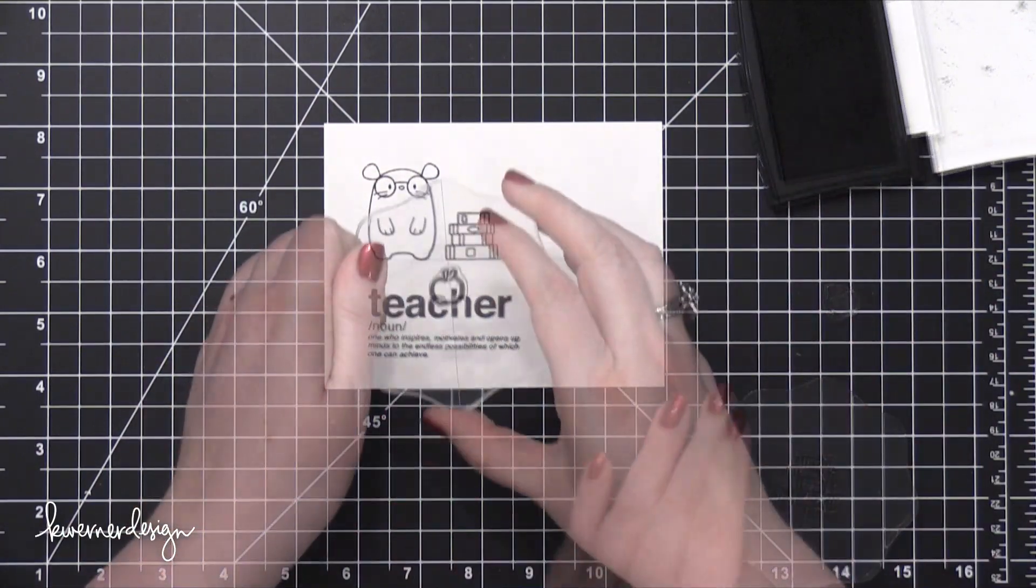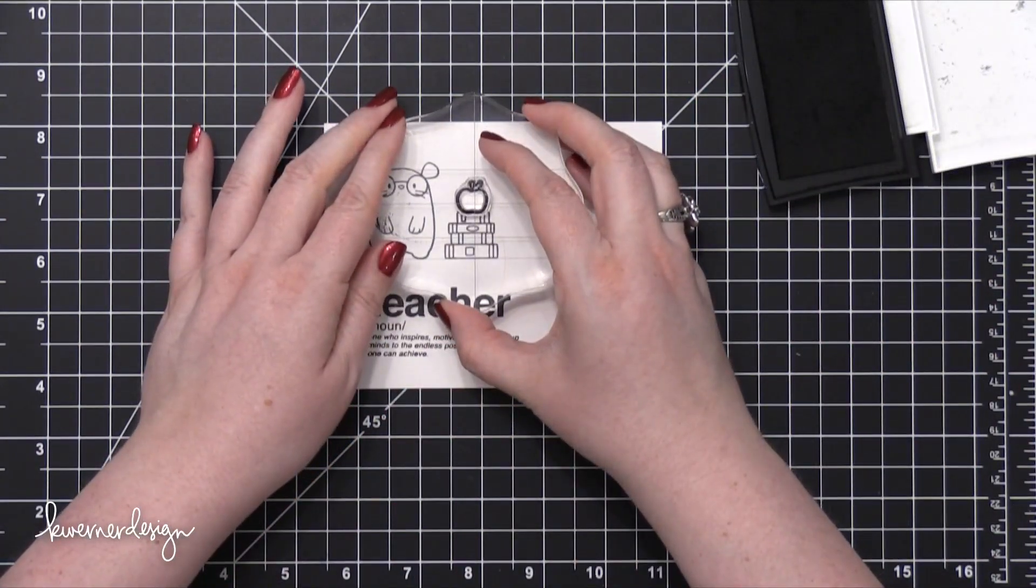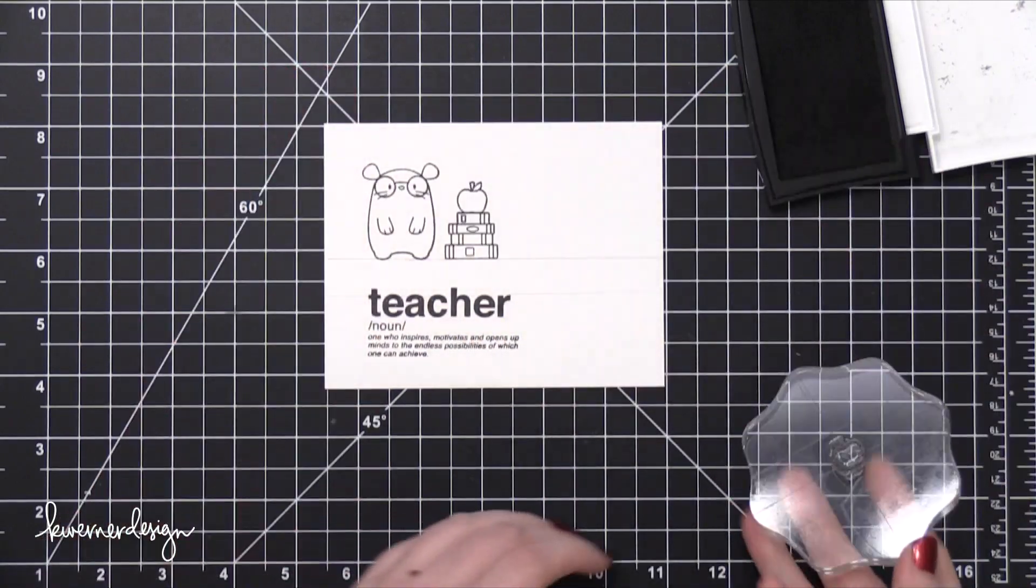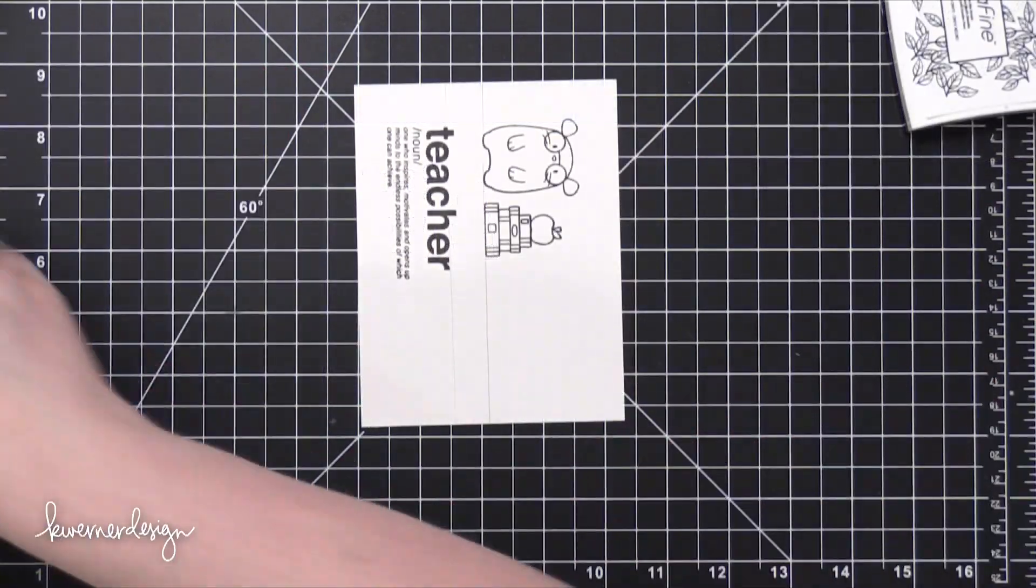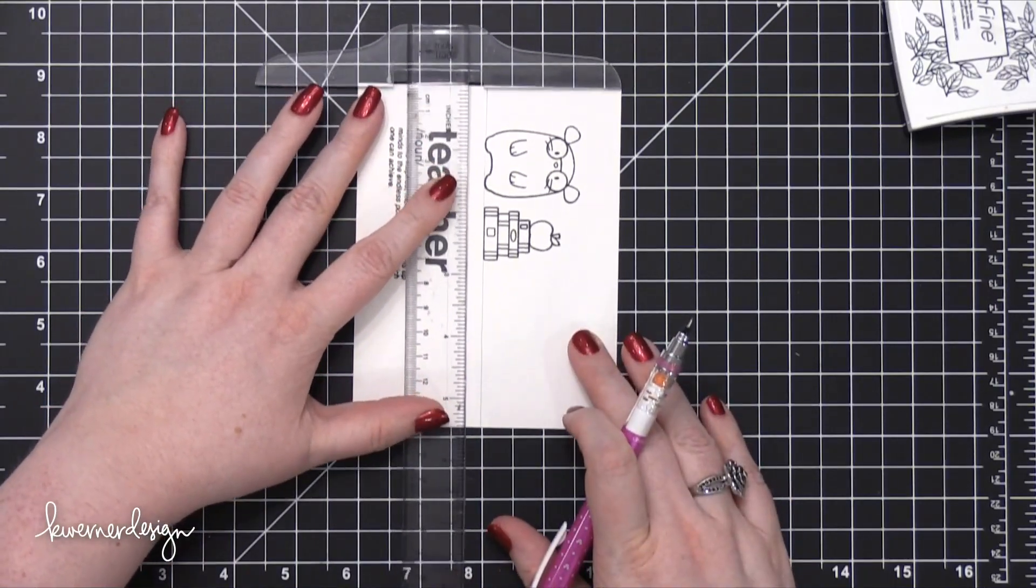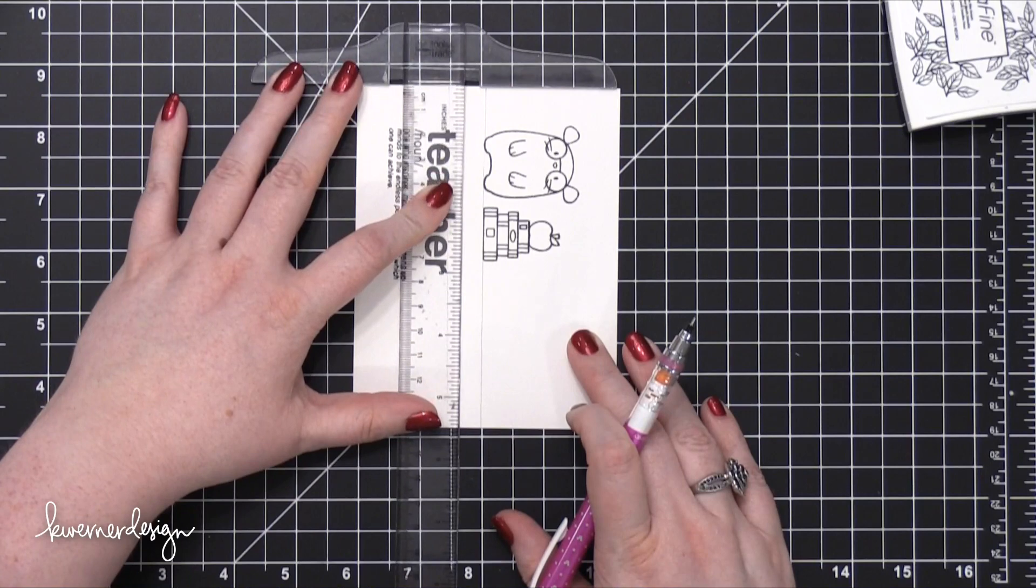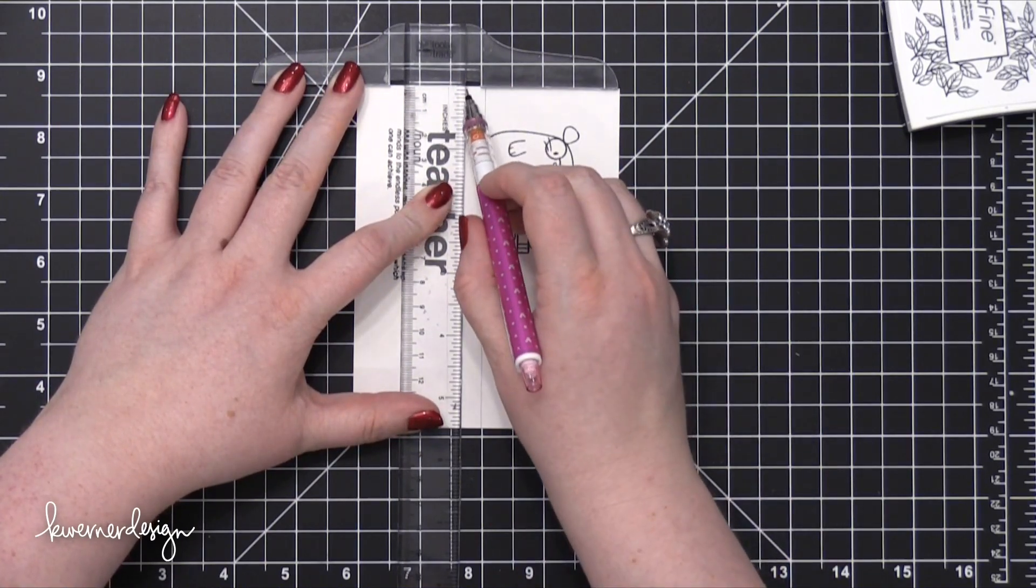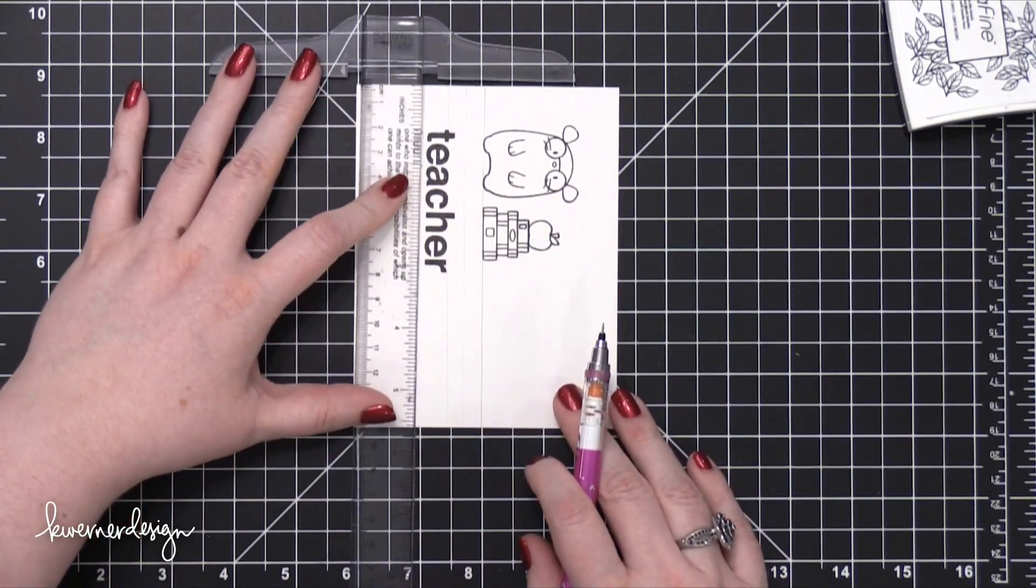And then I'm going to put an apple on top of the stack of books as well. So I've used a ruler to draw in some lines underneath the mouse just so I knew where to stamp those smaller books. And I'm using my ruler once again to finish drawing in those books that the mouse is going to be standing on.